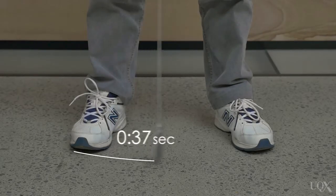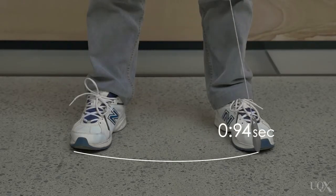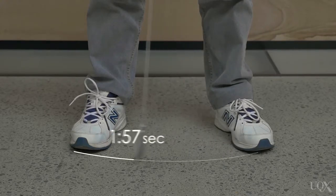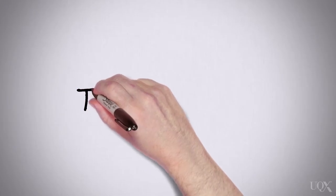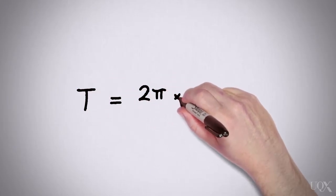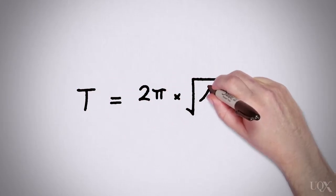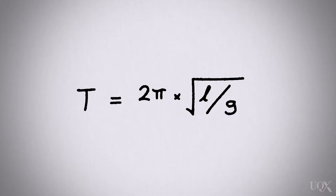One oscillation is the time taken for the mass to travel from one side to the other and then back to its starting point. This can be expressed by the formula: time equals 2 pi multiplied by the square root of the string length over g.